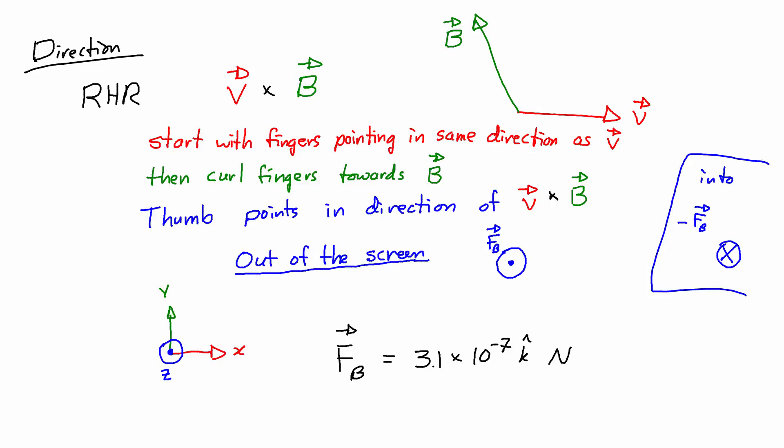Another way to write this if you don't want to use unit vectors is to just talk about the direction in words, so we could say the force is 3.1 times 10 to the negative 7 newtons and I could write out of the screen, or in this case because the directions were given with respect to the compass rose northeast southwest, the direction up corresponds to out of the page.